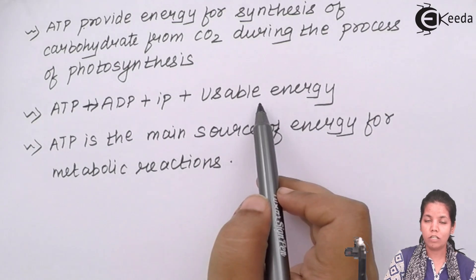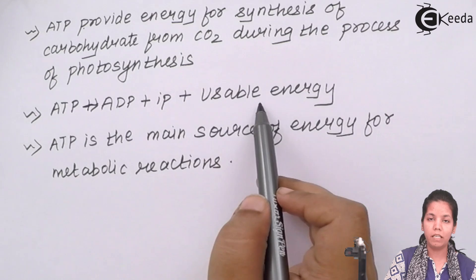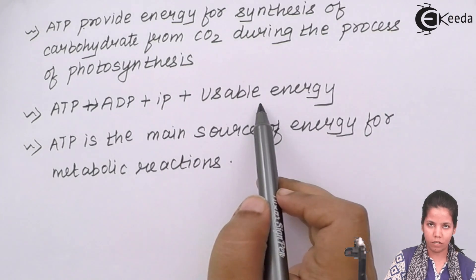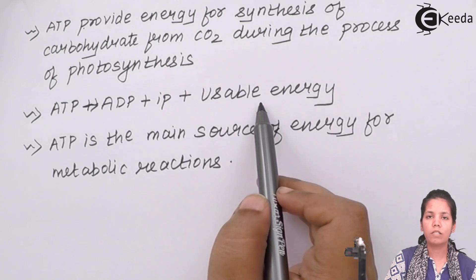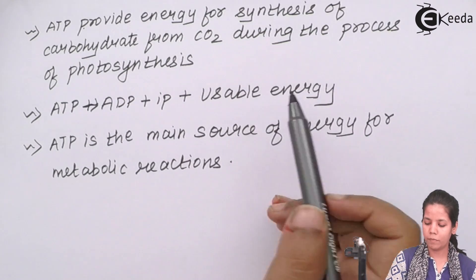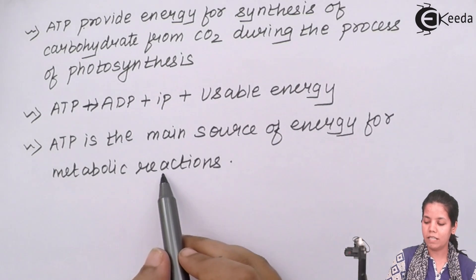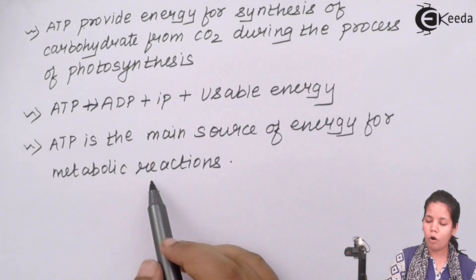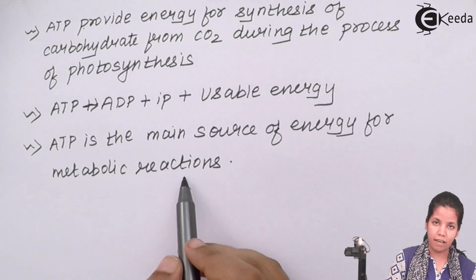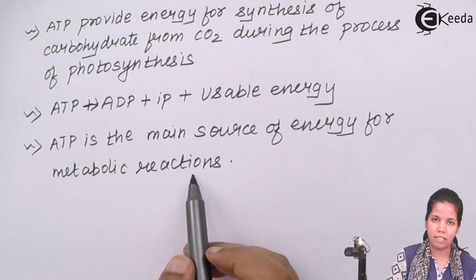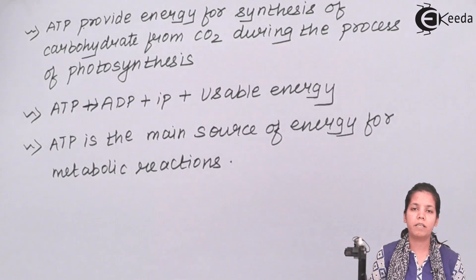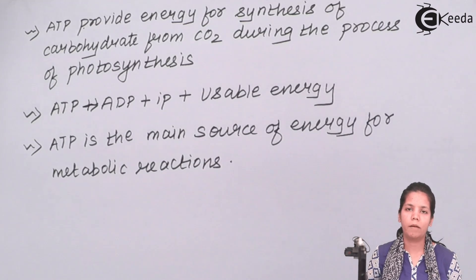You basically have ATP, then ADP, and then AMP. ATP is adenosine triphosphate, ADP is adenosine diphosphate, and AMP is adenosine monophosphate. In simple terms, ATP is the main source of energy for all metabolic reactions in a cell. It is the energy currency of the cell, and a large amount of ATP is formed inside the mitochondria.